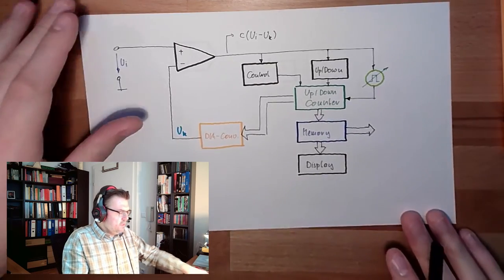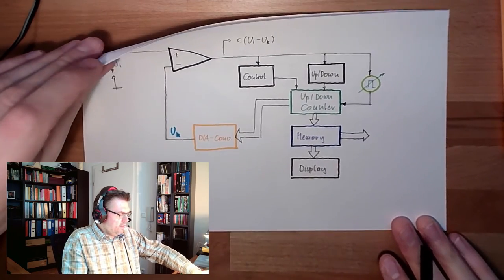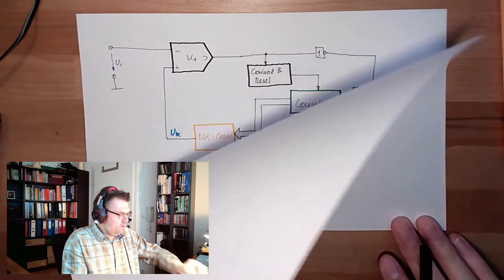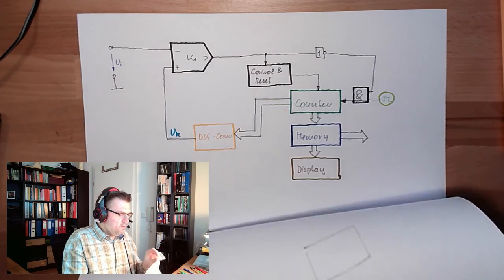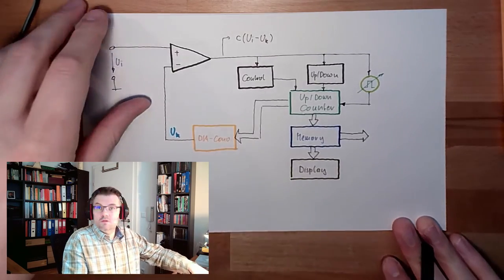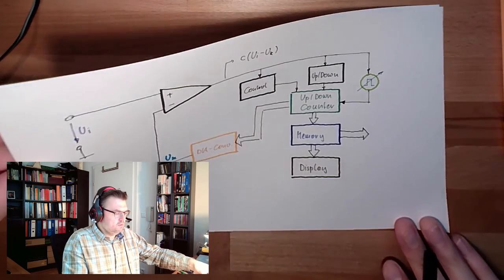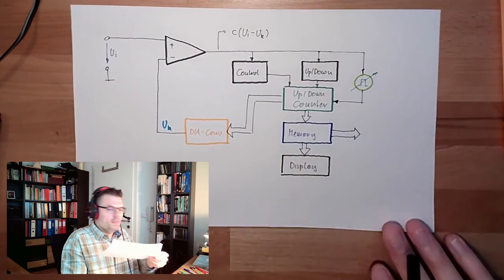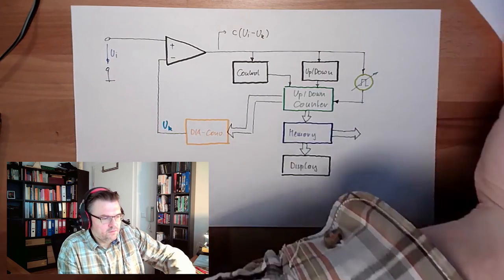So you see the difference between last time's compensation method and our continuous approximation is not that big, of course.